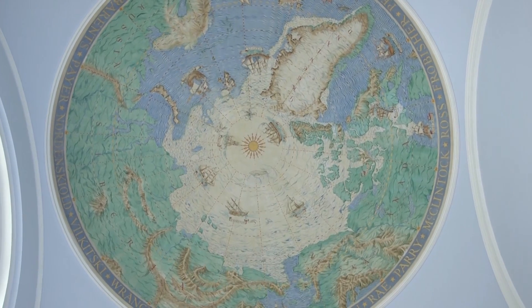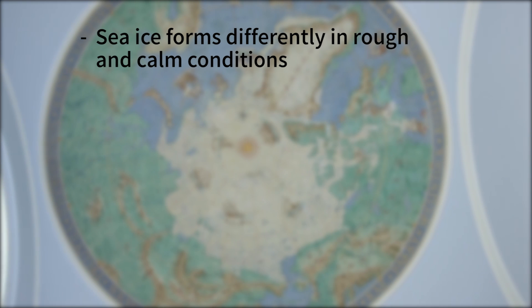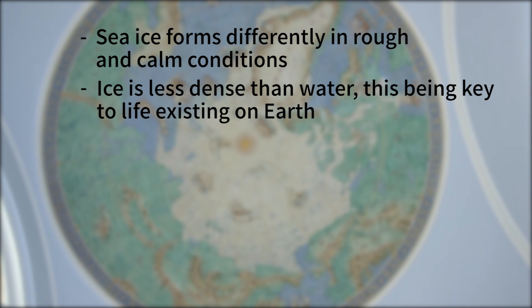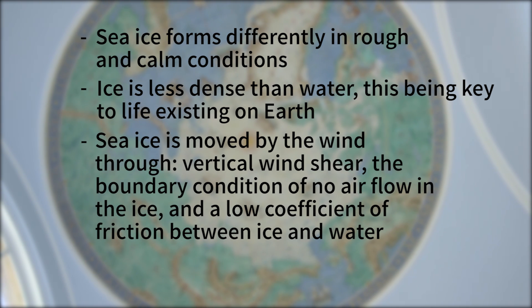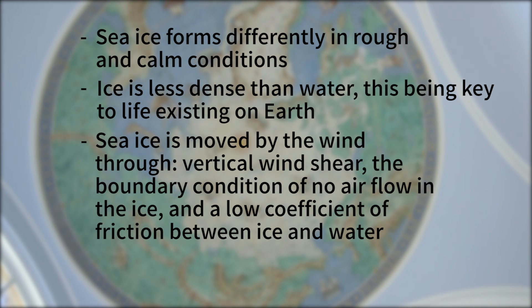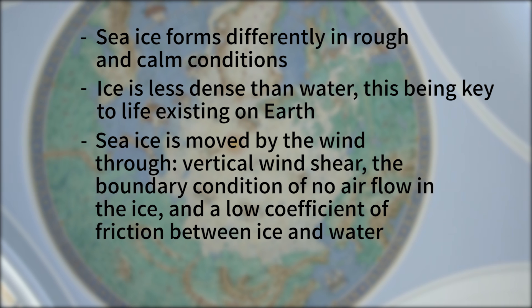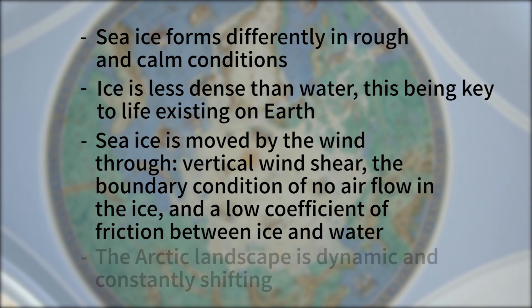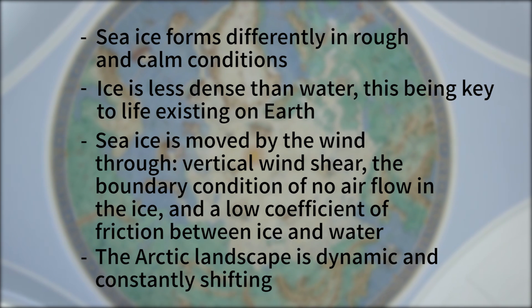In this oceanic-focused episode we've covered the formation of sea ice and how it differs in rough and calm conditions, the fact that ice is less dense than liquid water and that this is key to life existing on Earth, that sea ice is mobilized by the wind through a vertical wind shear and the boundary condition that the air is not moving in the ice, combined with the low coefficient of friction between sea ice and the ocean underneath. And lastly, that the Arctic landscape isn't boring. It's a fascinating, ever-changing sea ice landscape with lots of different features.